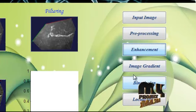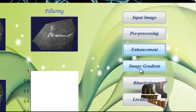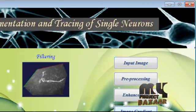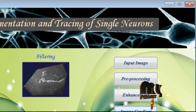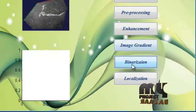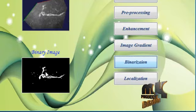The enhanced image is passed to the image gradient stage. The image gradient finds the edges of the image. This is the gradient of the image. The gradient image is passed to the binarization stage, where we convert the image to a black and white image by segmenting the neuron using a Gaussian-based method. If the pixel belongs to the neuron it is marked as 1; if not, it is marked as 0. This is the binary image displayed on the fourth axis.